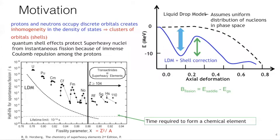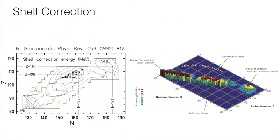The effect of this shell correction is illustrated in this figure, where the half-life of the nuclei is plotted against the fissility parameter, which represents the competition between the nuclear force and the Coulomb repulsion. We see that in the liquid drop model, the lifetime beyond Rutherfordium — at around Z=100 — falls below the time required to form a chemical element. To explain this observed trend of heavy and super-heavy nuclei, we need to take into account the shell corrections.